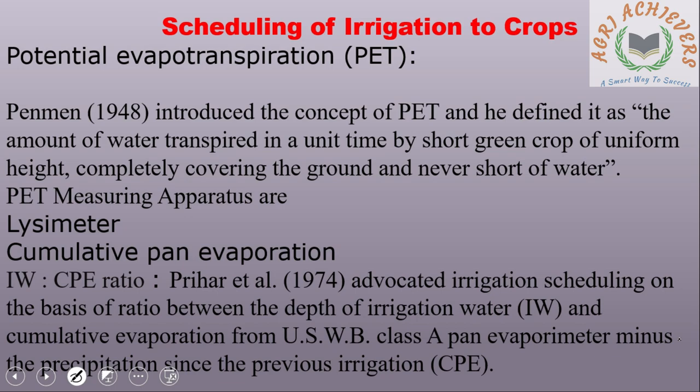Potential Evapotranspiration (PET): Penman introduced the concept of PET and defined it as the amount of water transpired in a unit time by a short green crop of uniform height completely covering the ground and never short of water. Apparatus used for measuring PET include lysimeter and cumulative pan evaporation.